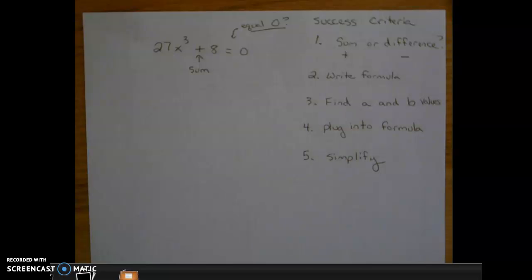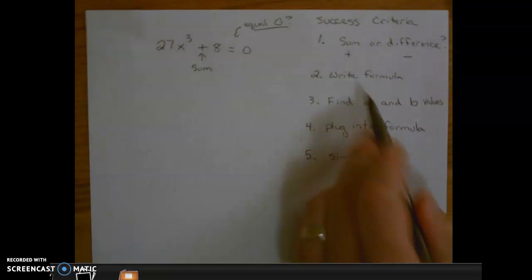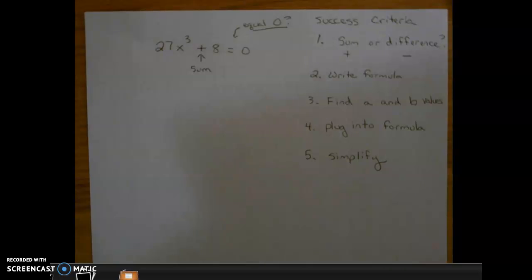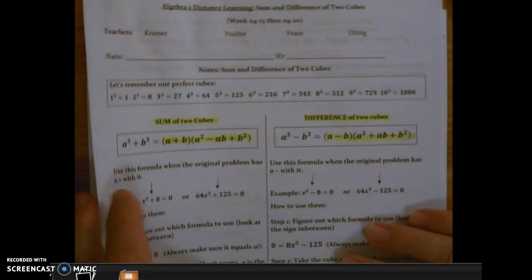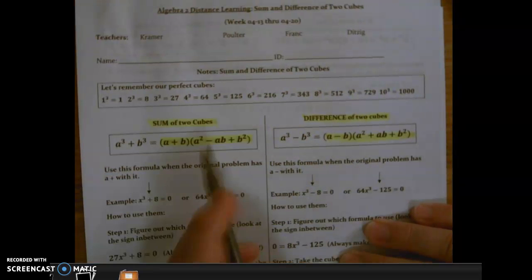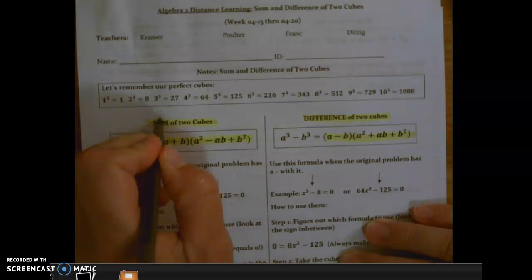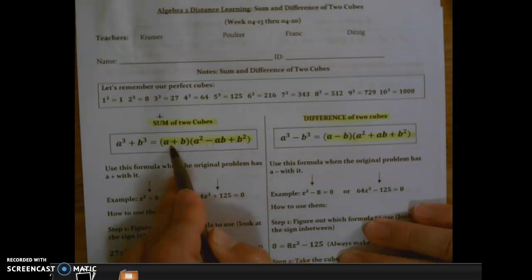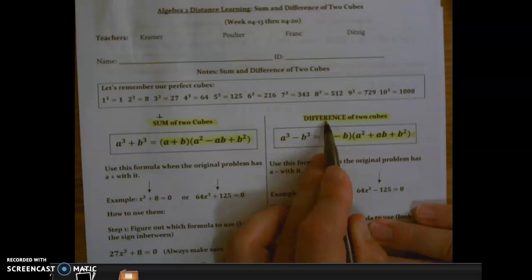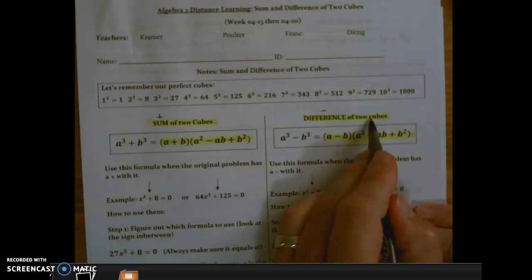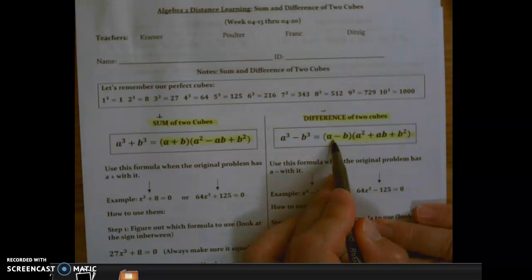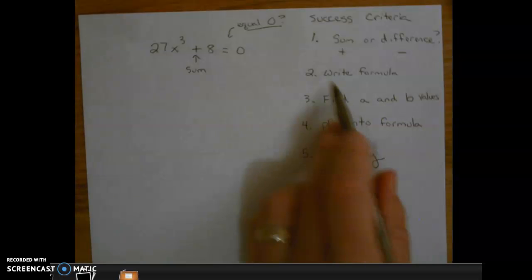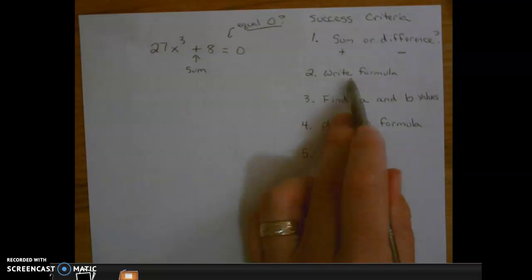So we're going to be looking at success criteria number two, write the formula. In your packet, there's two formulas. Here's the formula for the sum of two perfect cubes. We have two factors. And here's the formula for difference of two cubes.